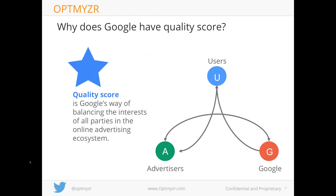First, why does Google even have a quality score? If you think back to the days before Google AdWords, online advertising was in shambles. There was banner blindness, irrelevant ads everywhere, nobody was clicking on ads or interacting with them, so prices for ads were going down. Publishers weren't making money, and users were having a lousy experience seeing ads that made no sense to them.